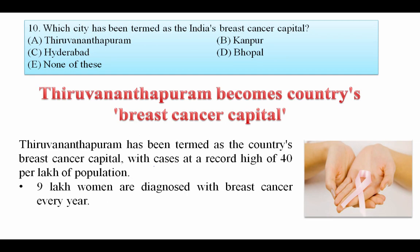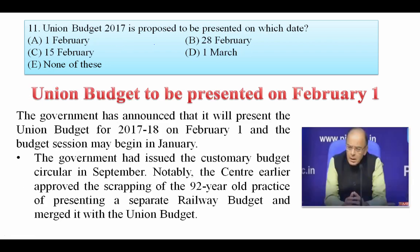Which city has been termed as India's breast cancer capital? Thiruvananthapuram has been termed as the country's breast cancer capital, with cases at a record high of 40 per lakh of population. About 9 lakh women are diagnosed with breast cancer every year. Your answer is Thiruvananthapuram.